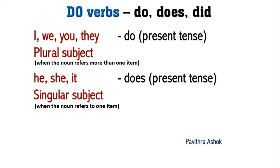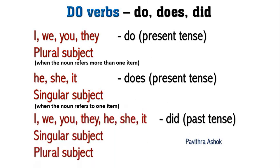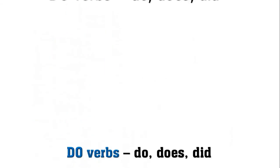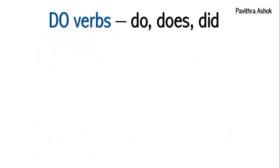If the subject is I, we, you, they, he, she, or it — singular subject as well as plural subject — we use 'did' in past tense. First we'll understand the examples of do verbs: 'do'.